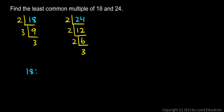Now let's write these out. I have 2 times 3 times 3 for 18 — and this is tricky, you have to write this spread out properly: 2 times, then come way over here, 3 times 3. And then 24 is 2 times 2 times 2 times 3, so I'll write 2 times 2 times 2 times 3.